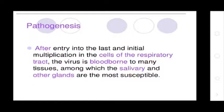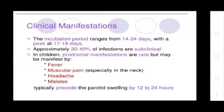Pathogenesis of Mumps: After entry and initial multiplication in the cells of the respiratory tract, the virus is blood-borne to many tissues, among which the salivary and other glands are the most susceptible. The incubation period is 14 to 24 days, with a peak of 17 to 18 days. Approximately 30 to 40% of infections are subclinical.